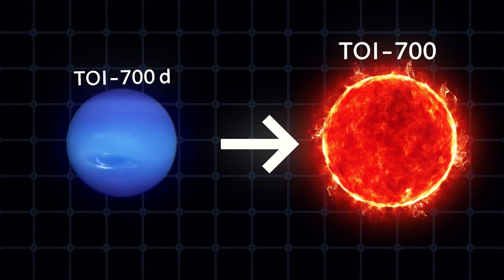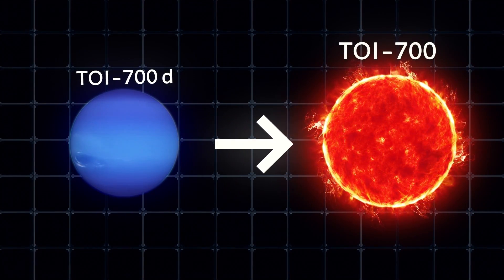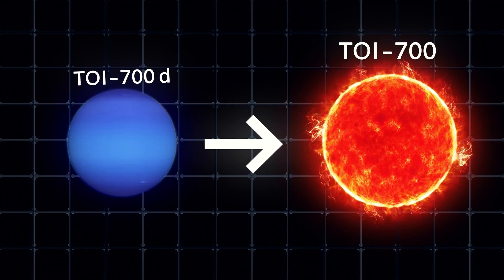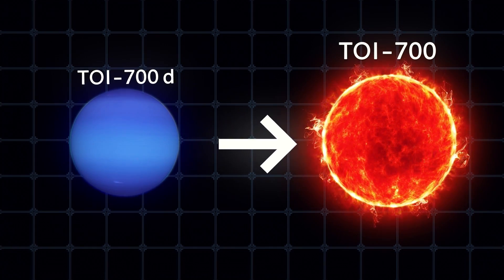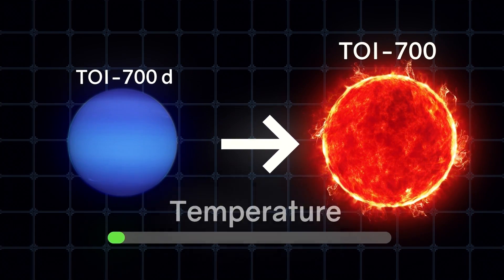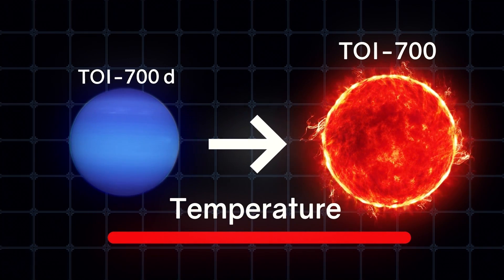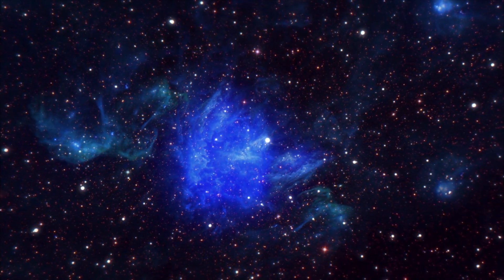The main obstacle to the existence of life on its surface, according to NASA scientists, may be that this planet always looks with the same side at the star. This can dramatically increase the temperature on its illuminated side, as well as unpredictably affect the nature of the movement of winds in the atmosphere. But let's be optimistic.